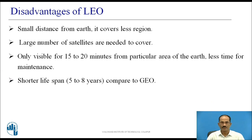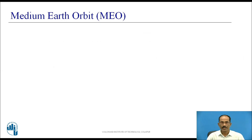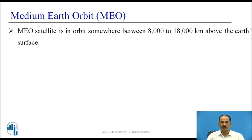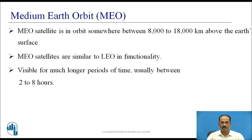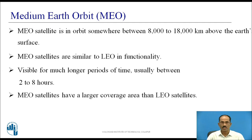Medium Earth Orbit, also called MEO. MEO satellites are in orbit somewhere between 8,000 to 18,000 kilometers above the earth's surface. MEO satellites are similar to LEO in functionality. Visible for much longer periods of time, usually between 2 to 8 hours. MEO satellites have a larger coverage area than LEO satellites — larger than LEO but smaller than GEO.